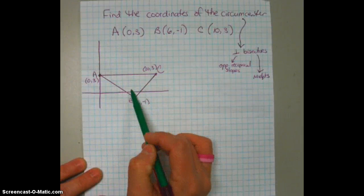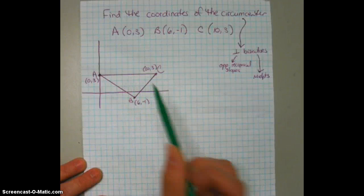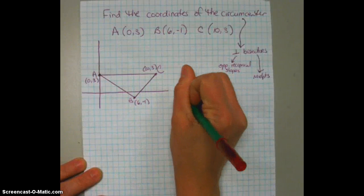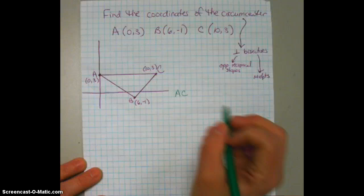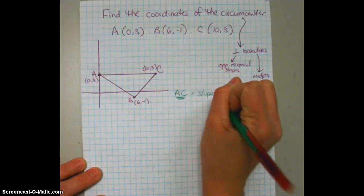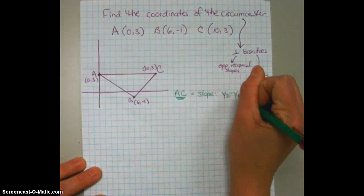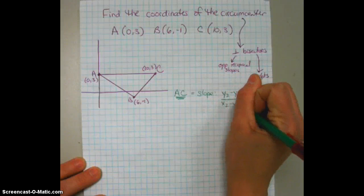And then be perpendicular to it, meaning its slope is going to be the opposite reciprocal of this slope. So we're going to be looking at segment AC first. The slope of segment AC, remember that slope is y2 minus y1 over x2 minus x1.